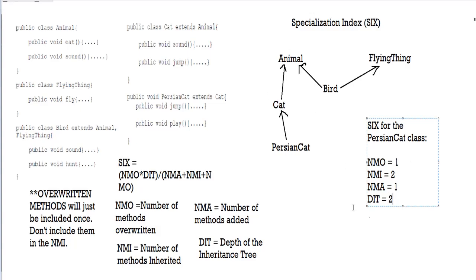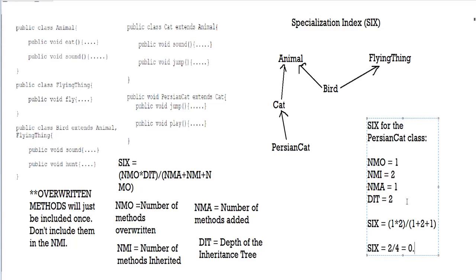Now we have all our values. All we have to do is calculate S6. S6 is equal to NMO multiplied by DIT divided by NMO plus NMI plus NMA. For the Persian cat class, that gives us 1 times 2 divided by 1 plus 2 plus 1, which is 2 divided by 4, equal to 0.5. And remember, you have to write it as a percentage, so it's equal to 50%. That is how you calculate the specialization index.